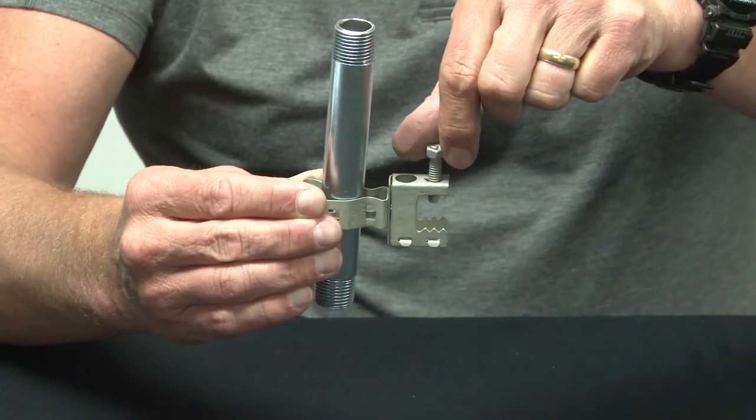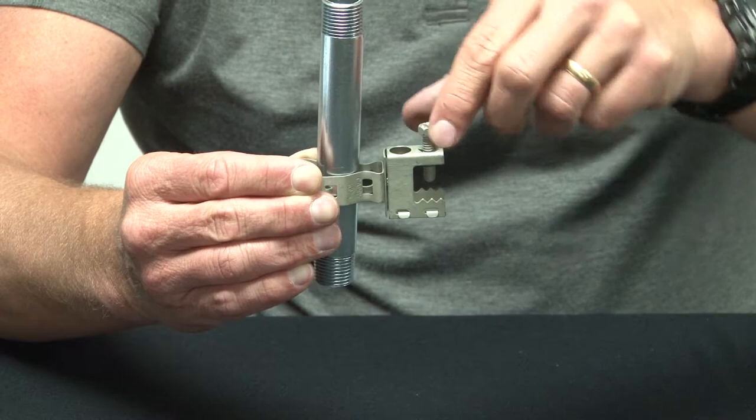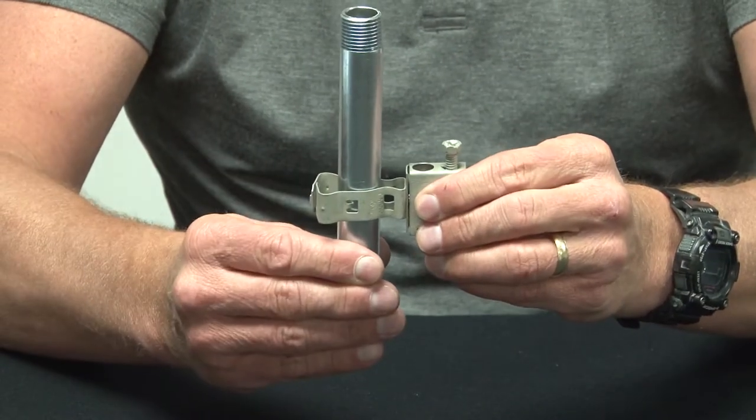The easy set screw design easily clamps on the structural member or beam and secures the pipe in place.